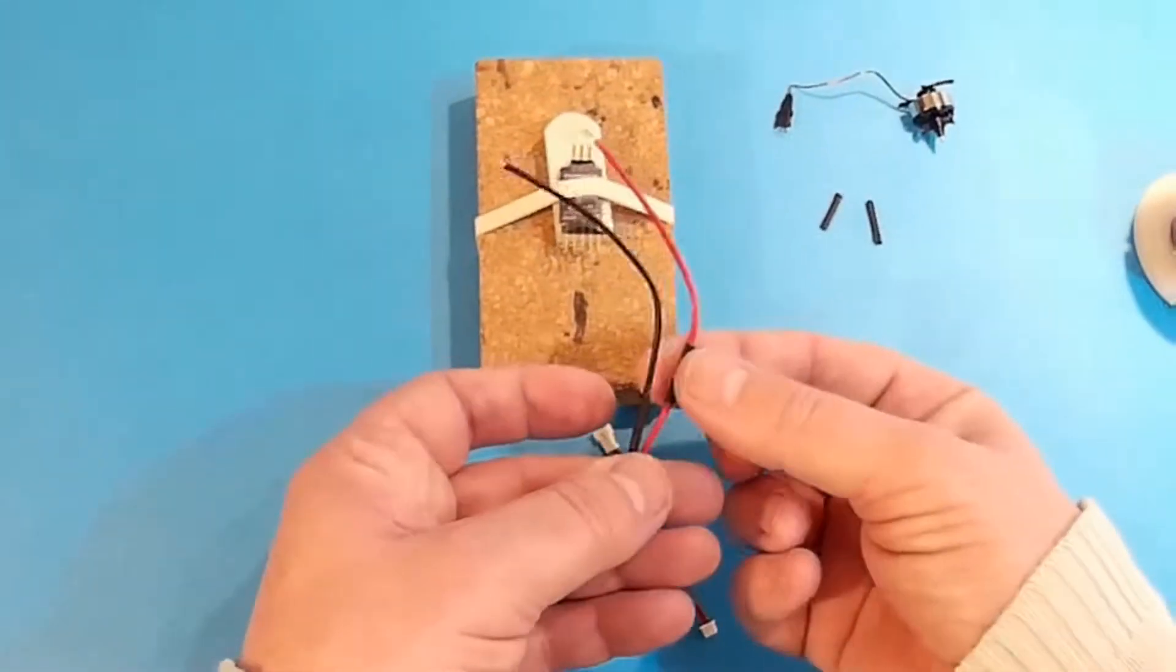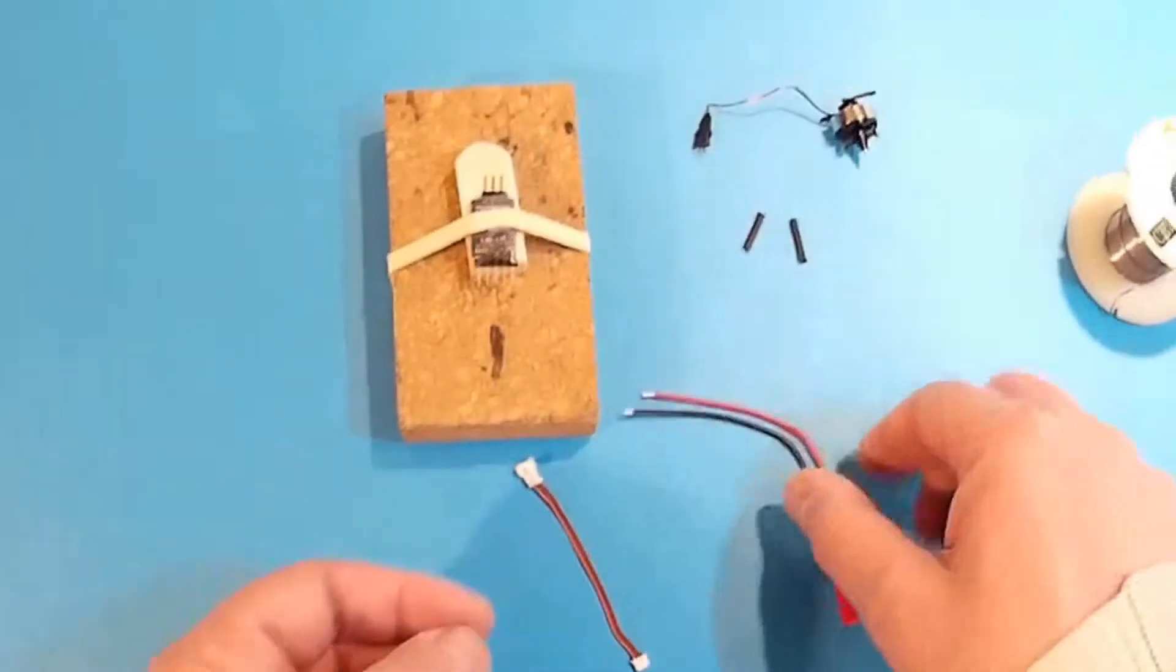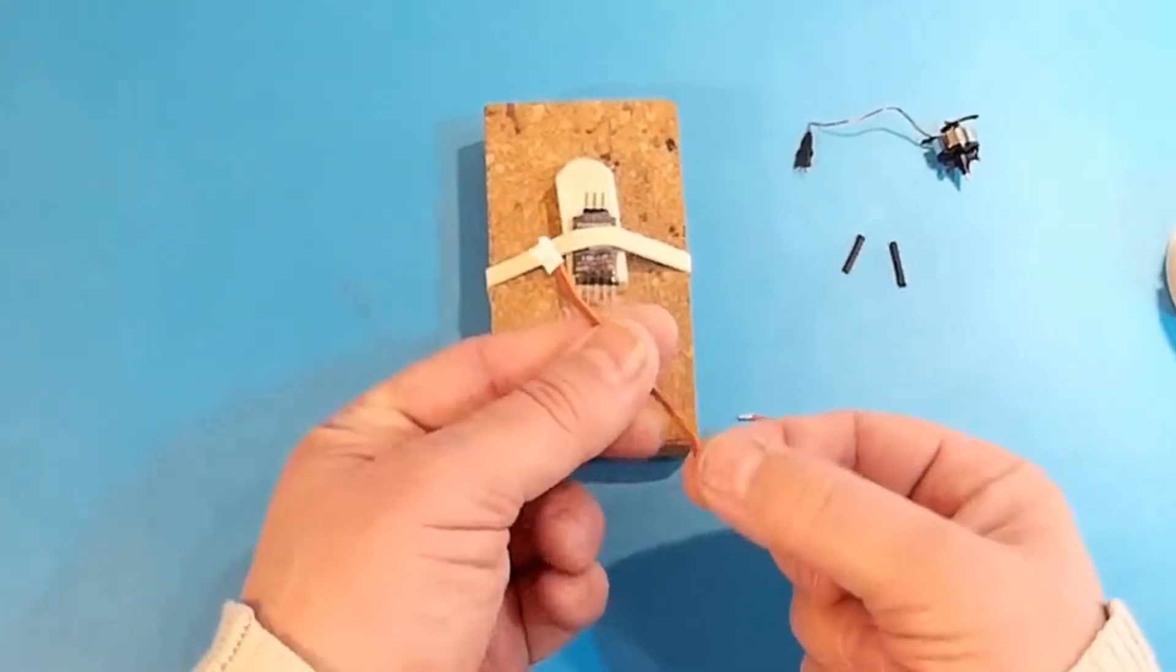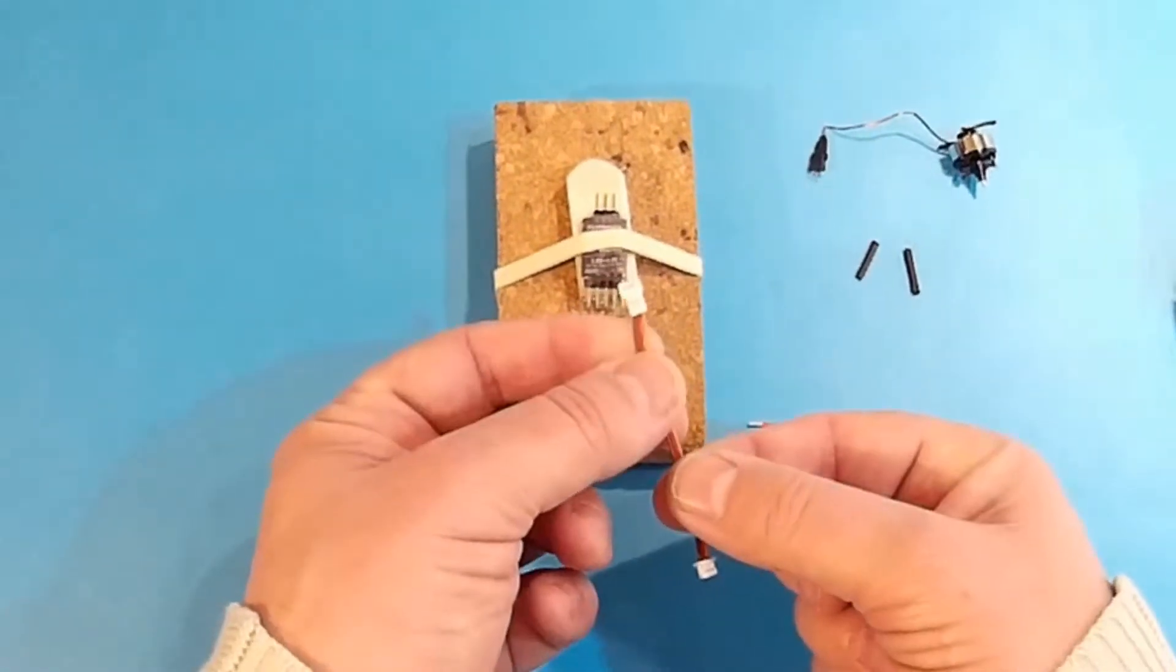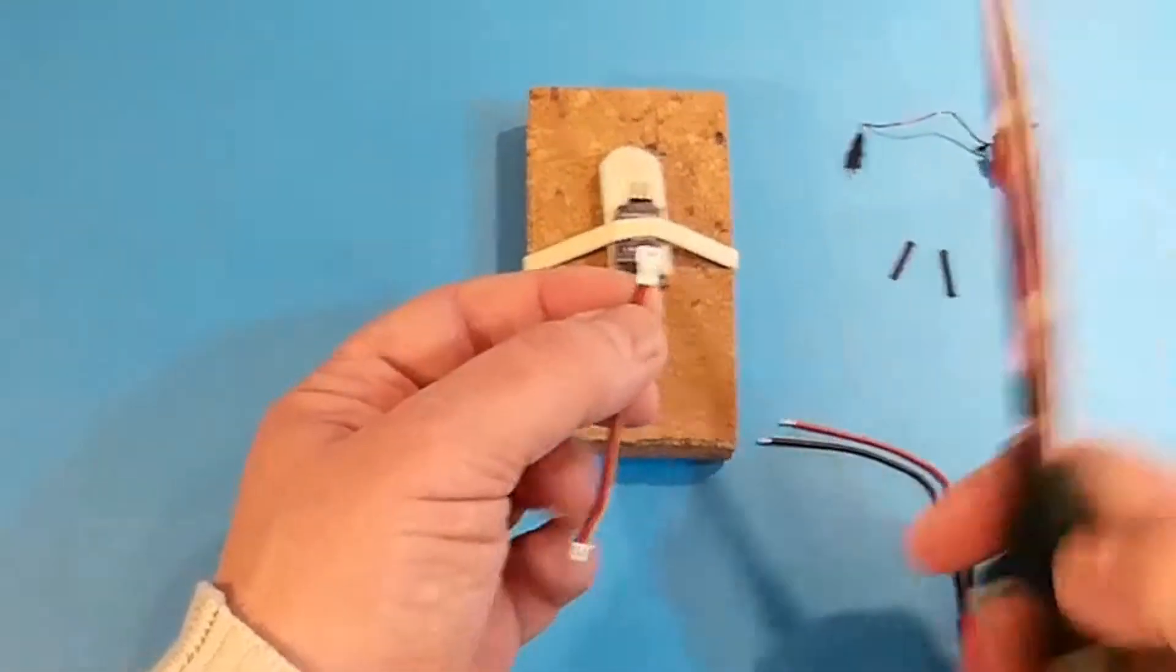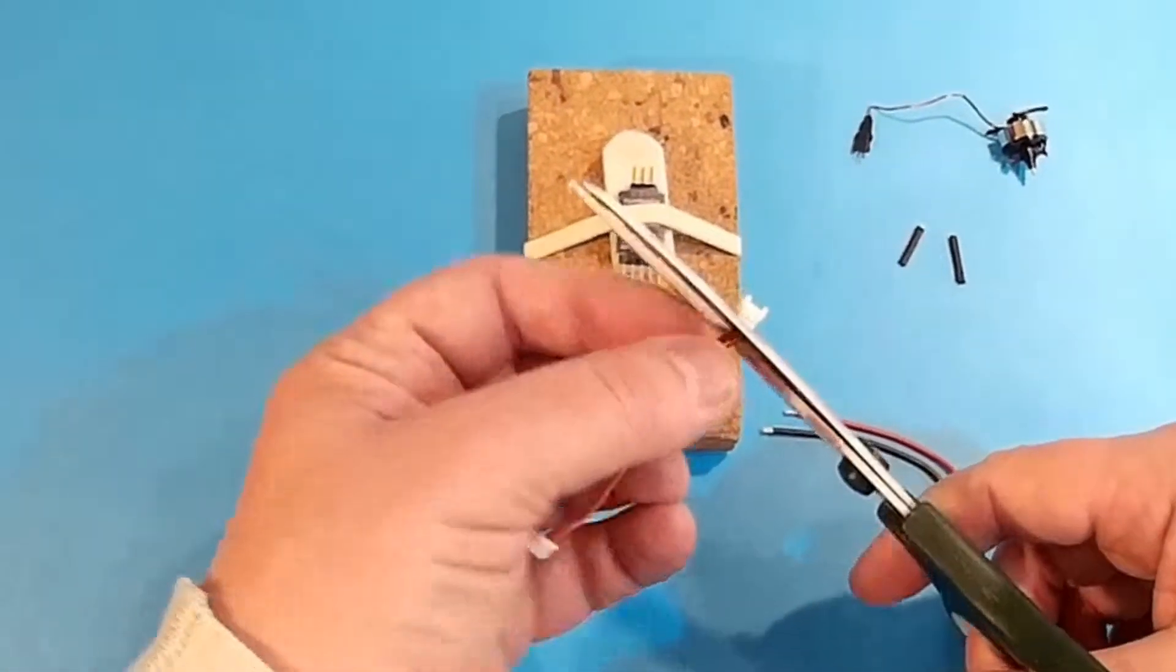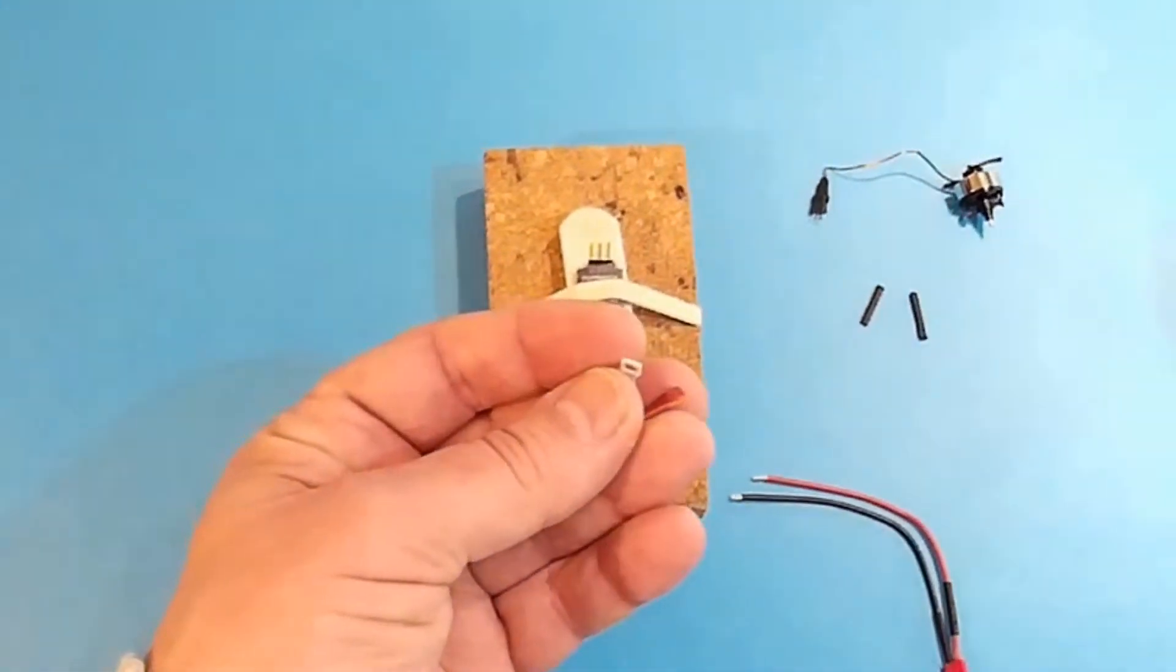So I've got some heat shrink tubing, slid that over into the holes. And here I have an extension lead for the mini servo extension. I'm going to cut off one end because I don't need that end.